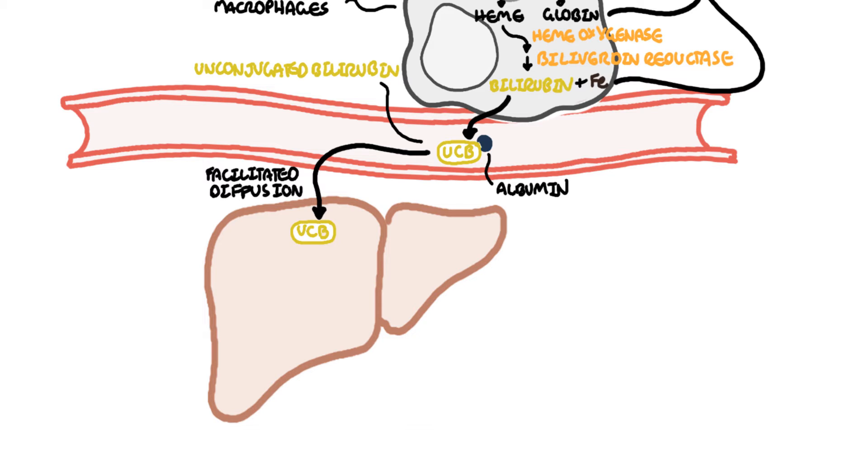Bilirubin enters the hepatocytes through facilitated diffusion, essentially through a concentration gradient. Here they undergo what is called glucuronidation. This process makes substances such as bilirubin more water soluble, which allows it to be excreted in bile and in urine.